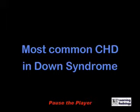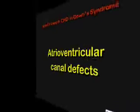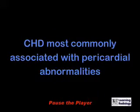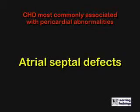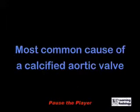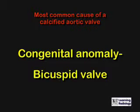What is the most common congenital heart disease in Down syndrome? Atrioventricular canal defects. What is the congenital heart disease most commonly associated with pericardial abnormalities? Atrial septal defects. What is the most common cause of a calcified aortic valve? A congenital anomaly of the valve — a bicuspid aortic valve.